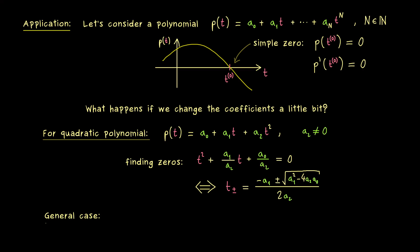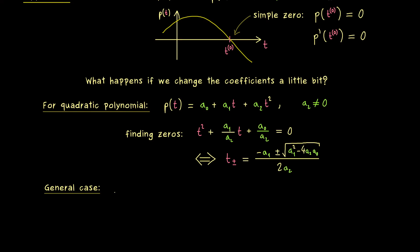But exactly there the implicit function theorem can definitely help us. We just have to define a suitable function capital F. And as always we split the domain up into two inputs. And the idea is that we put our variable t here into the second component and all the coefficients in the first component. Therefore now we call the coefficients x₁, x₂ and so on.